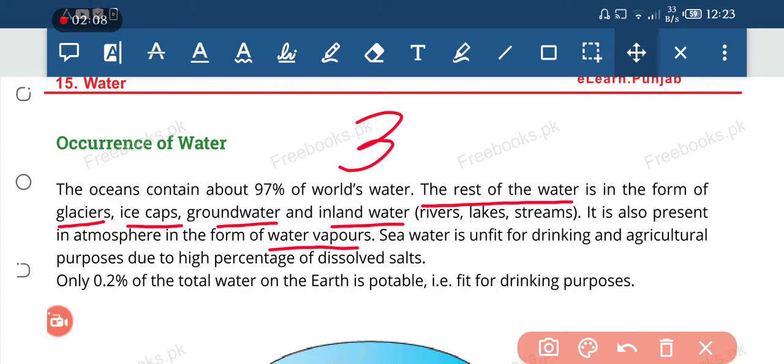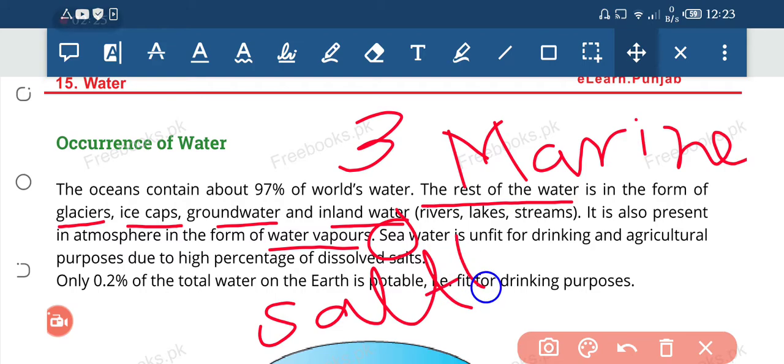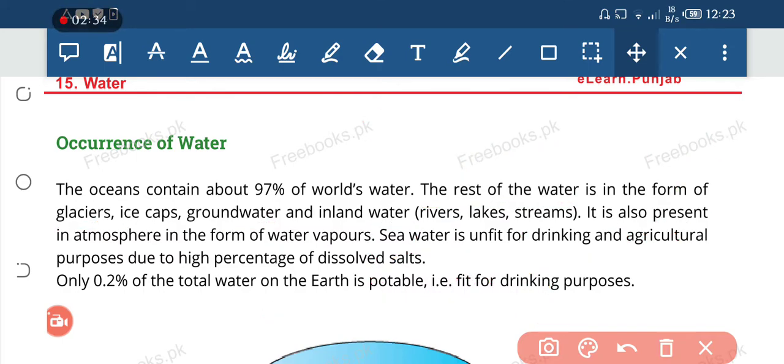Sea water is unfit for drinking and agricultural purpose due to high percentage of dissolved salt. Sea water ko hum fresh water nahi kahti, sea water ko hum kahti marine water. Marine water ka doosra matlab hota salty water. So we have fresh water or marine water, there are two types. Sea water is salty water because salt has a lot of components and this cannot be used for drinking or cooking.